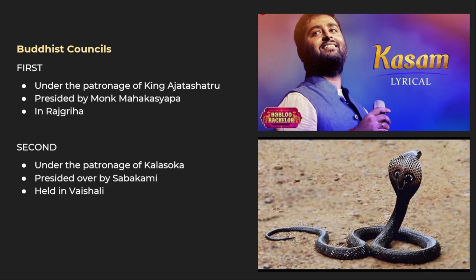Starting with Buddhism, I will help you learn all of them with the help of memory techniques. There were four Buddhist councils. The first was under the patronage of King Ajat Shatru. Ajat Shatru belonged to the Haryanka Dynasty — the first dynasty in the Magadha Empire. My code for Ajat Shatru is Arijit Singh, because I can easily visualize Arijit Singh. The first council was conducted under the patronage of King Ajat Shatru and presided by monk Maha Kasyap.